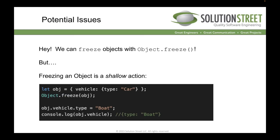You can freeze objects with Object.freeze(), but freezing is a shallow action — it only makes the top-level properties immutable. For example, if I have an object with a 'vehicle' property containing a nested object with 'type: car,' and I freeze the outer object, I can still change the underlying 'type' of the vehicle object inside it. So if I log the object's vehicle, I'll get 'type: boat.' Freezing is not a deeply immutable action on an object.